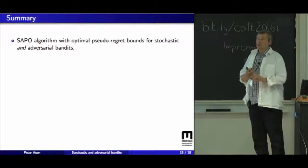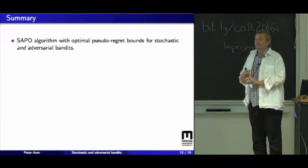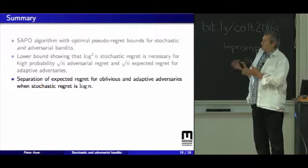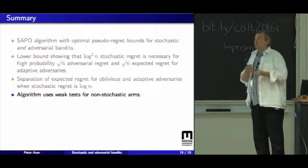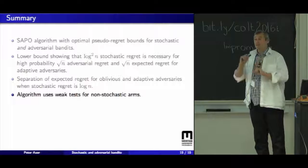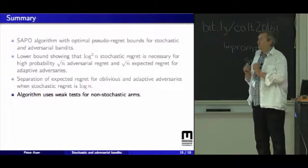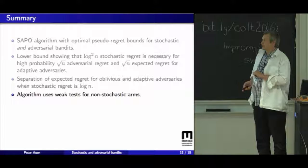To sum up, we have an algorithm which achieves nearly optimal pseudo-regret for stochastic and adversarial bandits. The lower bound shows that the log n squared is necessary to get high probability bounds. And this gives us a separation for oblivious adversaries and adaptive adversaries. The algorithm, which I haven't shown, uses weak tests to detect changes of the arms. Since we have only log n trials for the bad arm in total, the algorithm needs to be quite careful how to test for a change of the arm. So it does repeated weak tests to detect such a change.